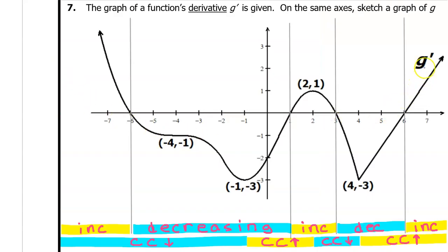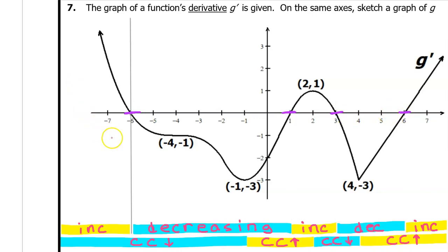One more thing: we are looking at the graph of g prime, which represents the slope of function g at every point. So we can easily tell where the slope will be zero — the slope will be zero here, here, here, and here. That means there will be a horizontal tangent line at each of these x values. Let's begin to graph the original function g one interval at a time, starting a new interval every time something changes — whether it's increasing to decreasing or concave up to concave down. In the first interval, function g should be increasing and concave down, and it should end with a horizontal tangent line.